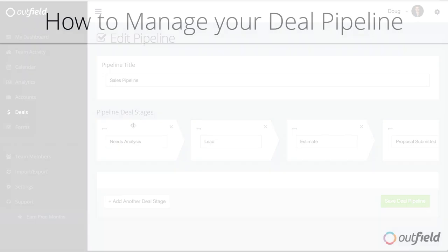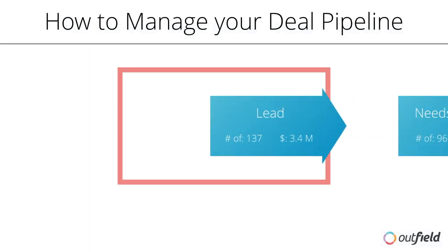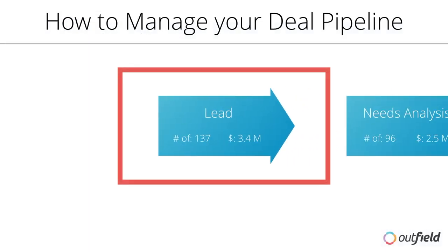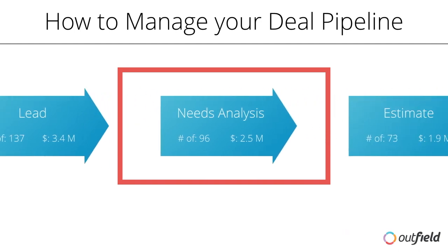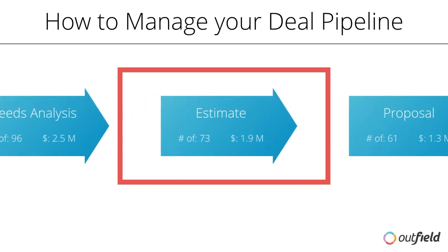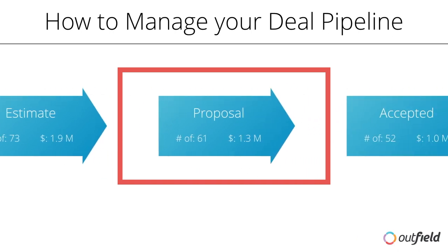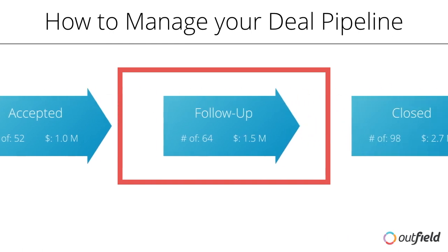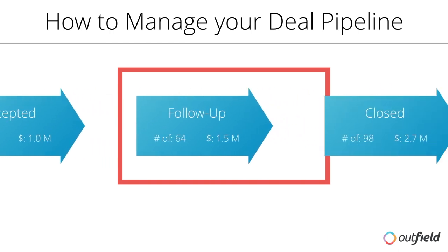Let's take a look at a sample sales pipeline. In this example, we start off with a lead — this is where we can house all of the potential clients we could do business with. Once the lead is qualified, we perform a needs analysis. The information gathered in the needs analysis helps us issue an estimate, which is then followed by a proposal. If all goes right, we can mark the deal as accepted. The final step is to follow up with the client and then mark the deal as closed.